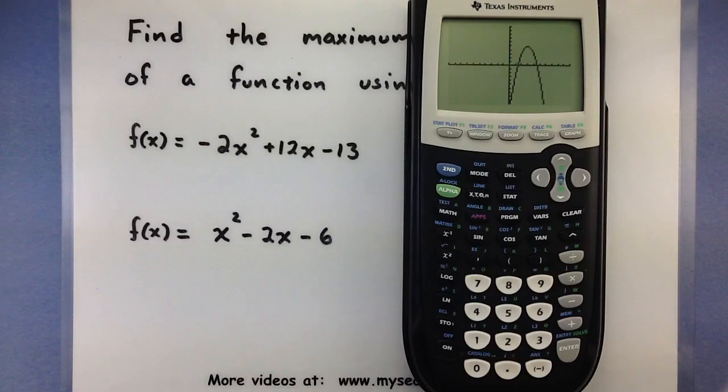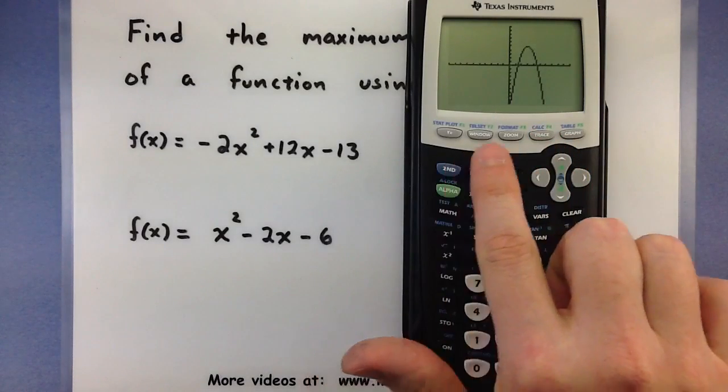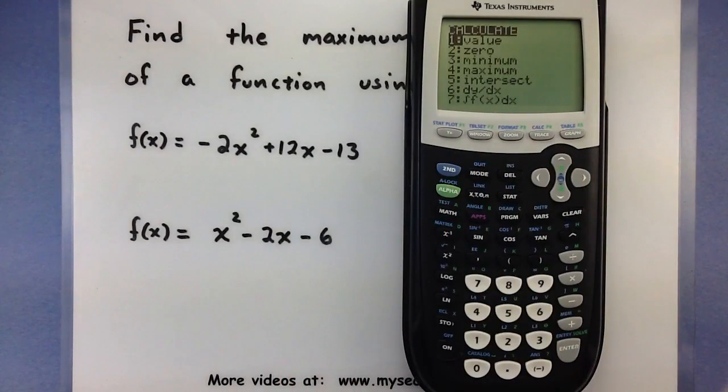Let's have the calculator find where that maximum value is by going to our calc menu. So we'll go second, hit this little trace button, and I'll bring us to our calc menu. We want it to find the maximum value, so we'll select number 4 here.